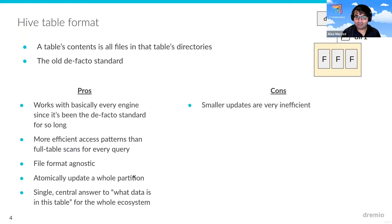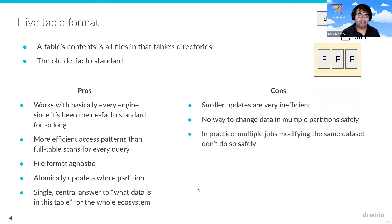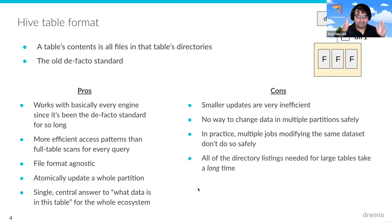Now, there were some problems that made this kind of hard to use. Smaller updates are very inefficient, because mechanically, when you make an update in Hive, it's going to update that entire partition. So if I want to change one record in a partition, I'm going to end up updating that entire partition just to update one record — really inefficient, really costly in the time to process that query. It was really unsafe to make changes to multiple partitions at the same time. If you have multiple writers trying to write to this dataset at the same time, it would be kind of hard to do that safely. Everything is based on files and folders, so when you're planning your queries, you're iterating through all these files, which really expands the amount of time you're spending on the query plan before you even get to the scan.